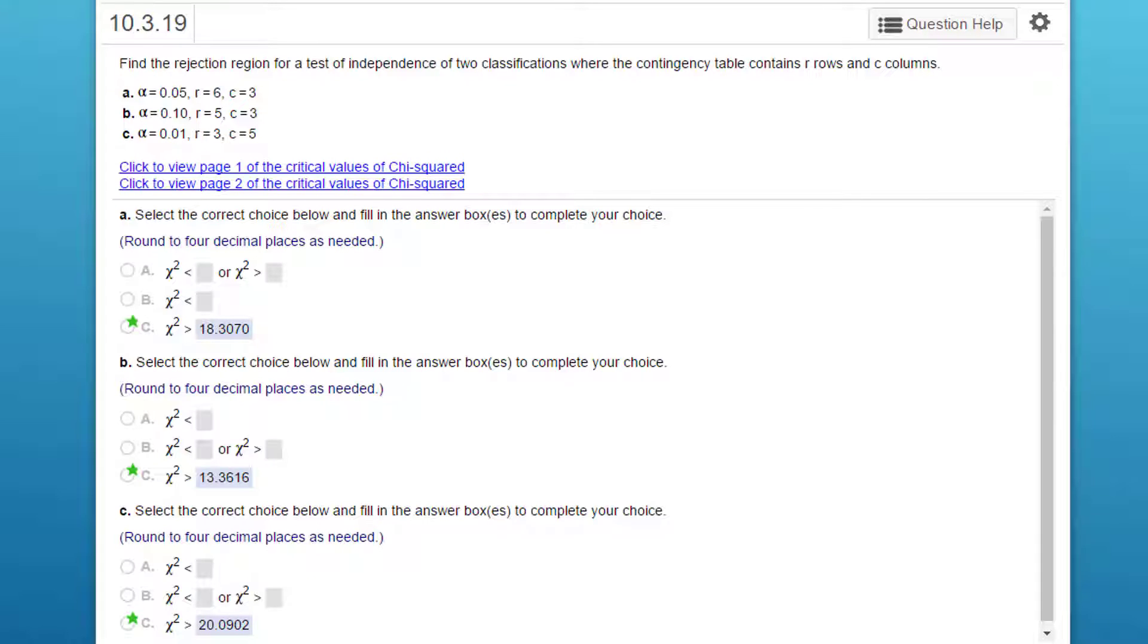Hi, this is Dr. Don. I'm back with another homework problem out of McLeave Chapter 10. This has to do with a contingency table, and it is a two-way table because it tells us there's two classifications, and we're given rows and columns. As always, they suggest using the tables, but we're not going to do that. We're going to use StatCrunch.